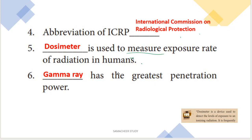Next question: what is used to measure the exposure rate of radiation in humans? The answer is dosimeter. A dosimeter is the device used to measure radiation dose in humans. Next: which has the greatest penetrating power? Gamma ray has the greatest penetrating power.